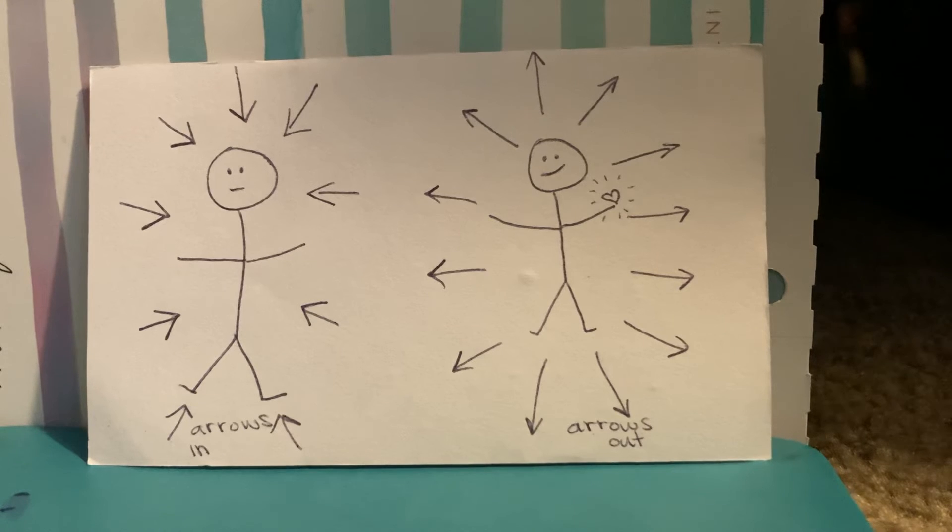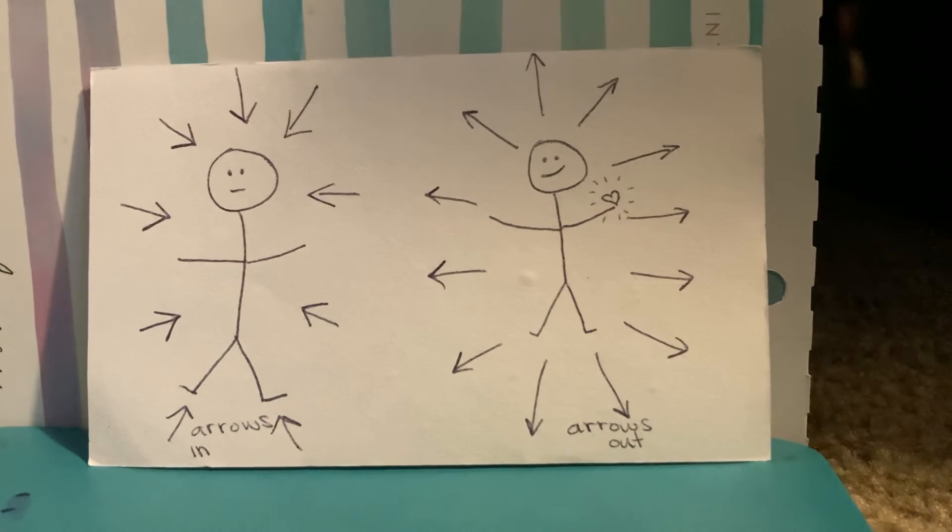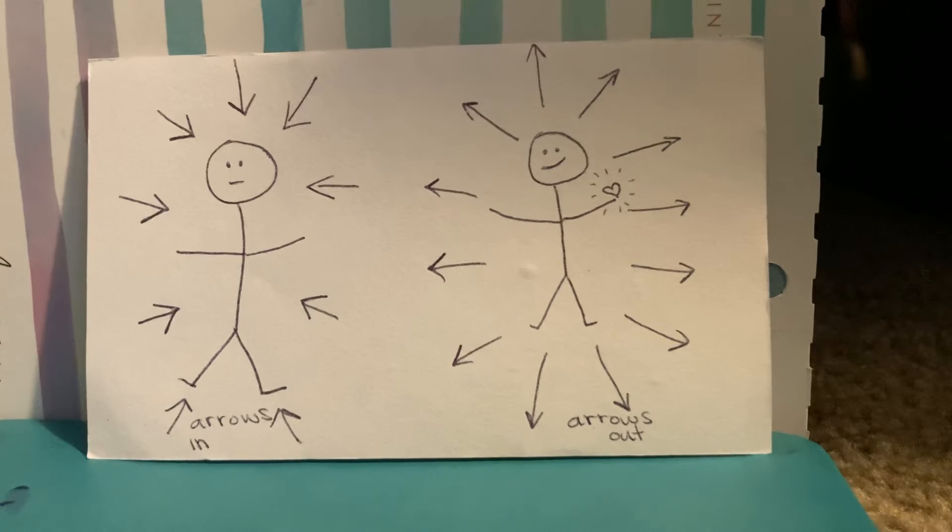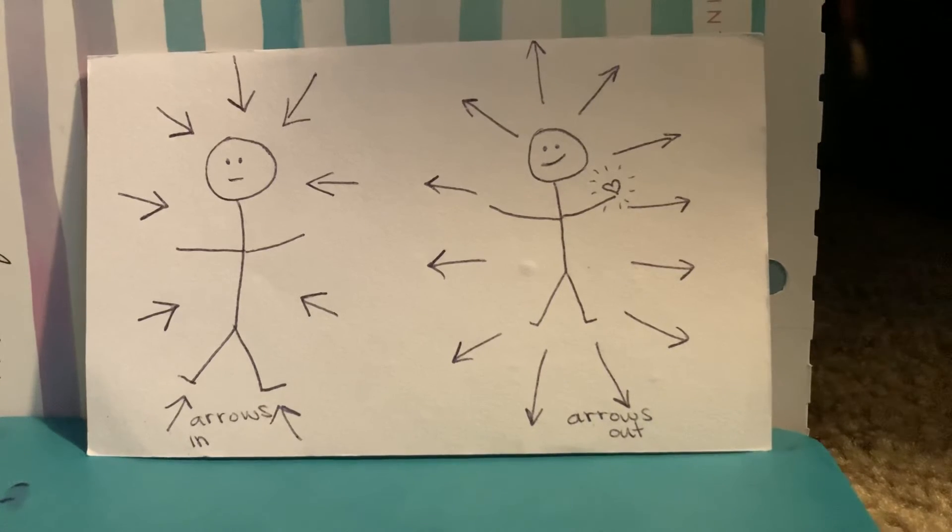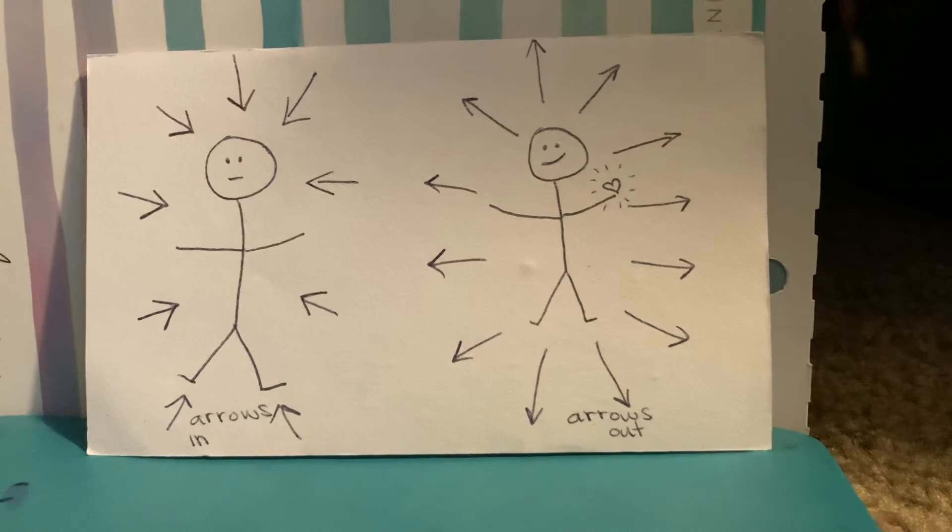Some people make energy within themselves. Contentment radiates from them and they focus on sharing that energy with others. It brings them joy to bring joy to others. This kind of person is arrows out.